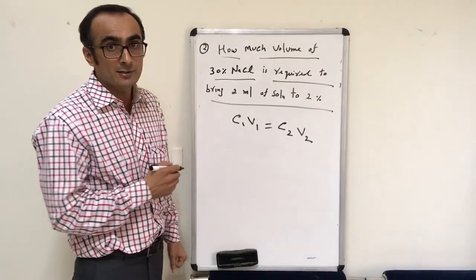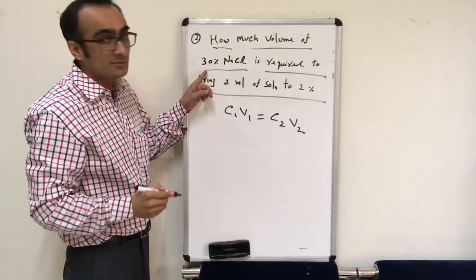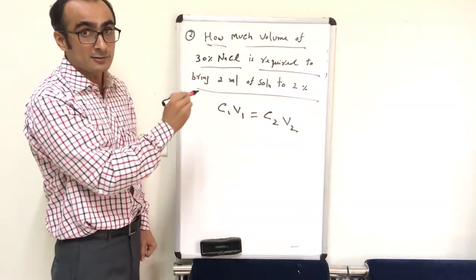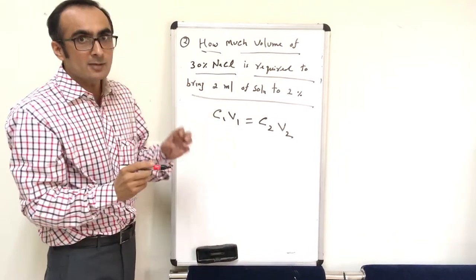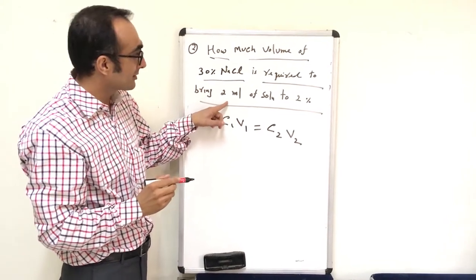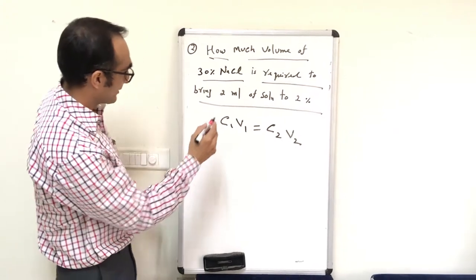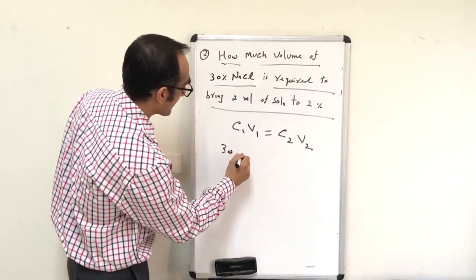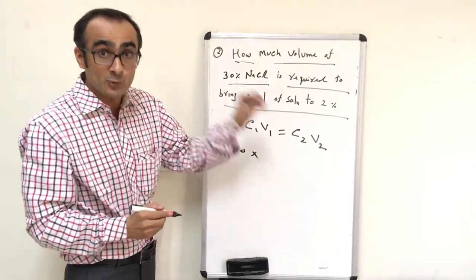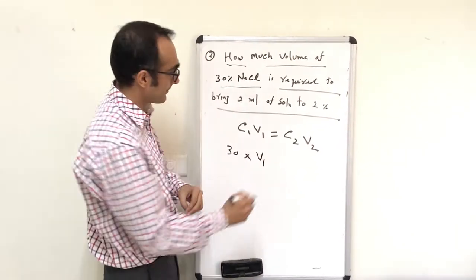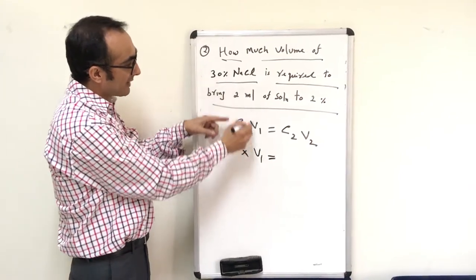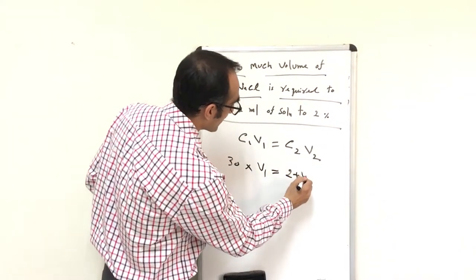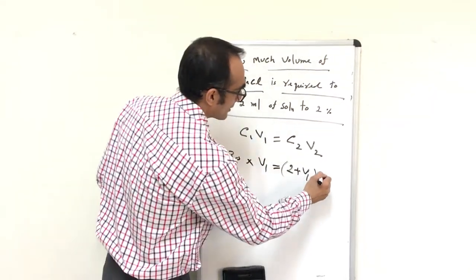Let's take another example of preparation of a working solution. How much volume of 30% NaCl is required to bring 2 ml of solution to 2%? The stock solution is 30% NaCl, and you need to add some volume of it to 2 ml of normal solution to make it 2%. Using the dilution equation C1V1 = C2V2: C1 is 30%, V1 is what we need to calculate, and the final volume is (2 + V1) ml at 2%.